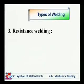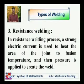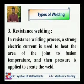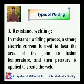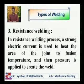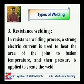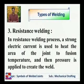The third type is resistance welding. In resistance welding, a strong electric current is used to heat the area of the joint to fusion temperature, and then pressure is applied to create the weld. The pressure may be heavy or it may be gentle.